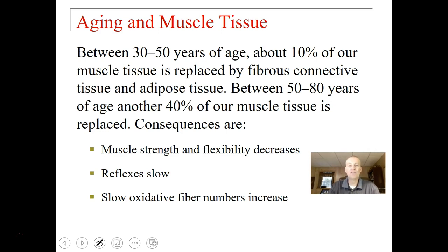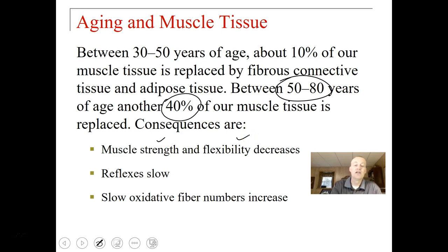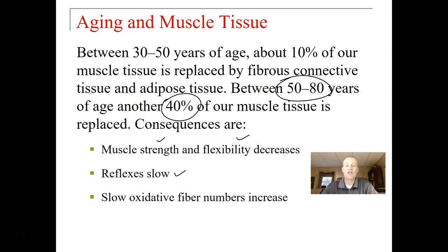Between 30 and 50 years of age, 10% of our muscle tissue is replaced by fibrous connective tissue and adipose tissue. Between 50 and 80 years of age, 40% is replaced. The consequences are loss of strength and flexibility, slower reflexes, and an increase in slow oxidative fiber numbers with a decrease in others. As you age, it's important to eat lots of protein and nutrients, and to exercise — including yoga, flexibility exercises, calisthenics, and aerobic activity, as well as weight training — to help diminish the loss of muscle fibers over time.